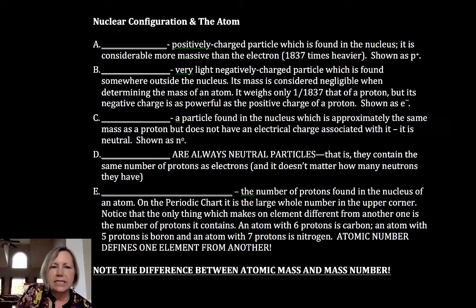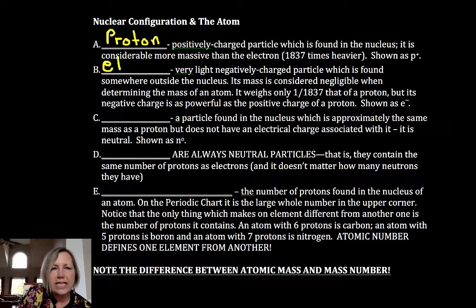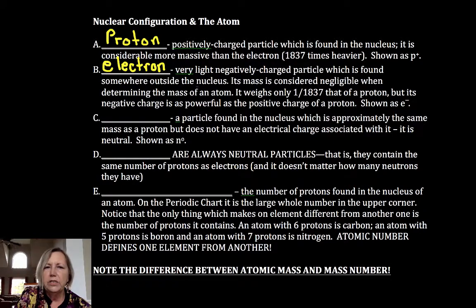Let's get some definitions down. The proton is the positively charged particle found in the nucleus, much heavier than an electron. The electron is the negatively charged particle and it's found somewhere outside the nucleus. We don't know where. We talk about the probability of finding an electron with a given energy.